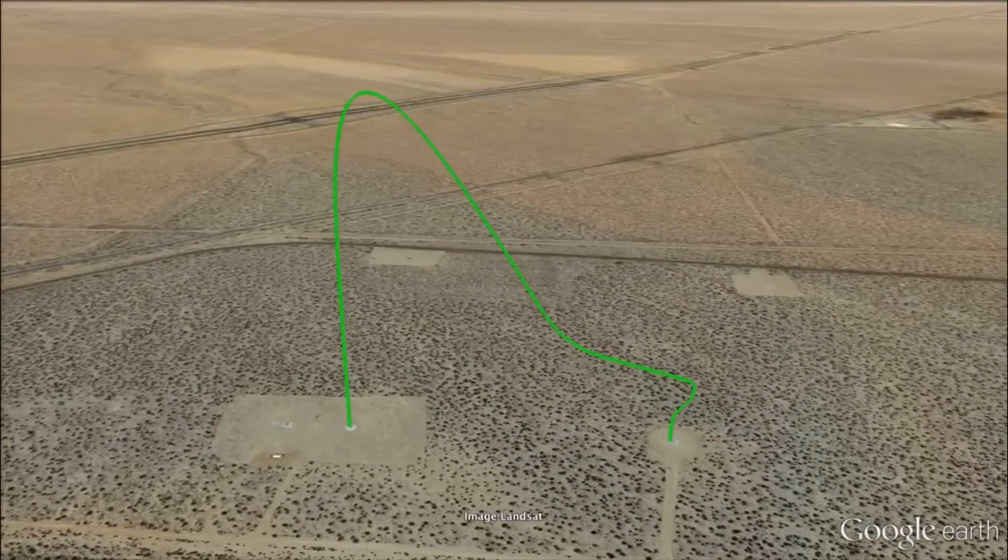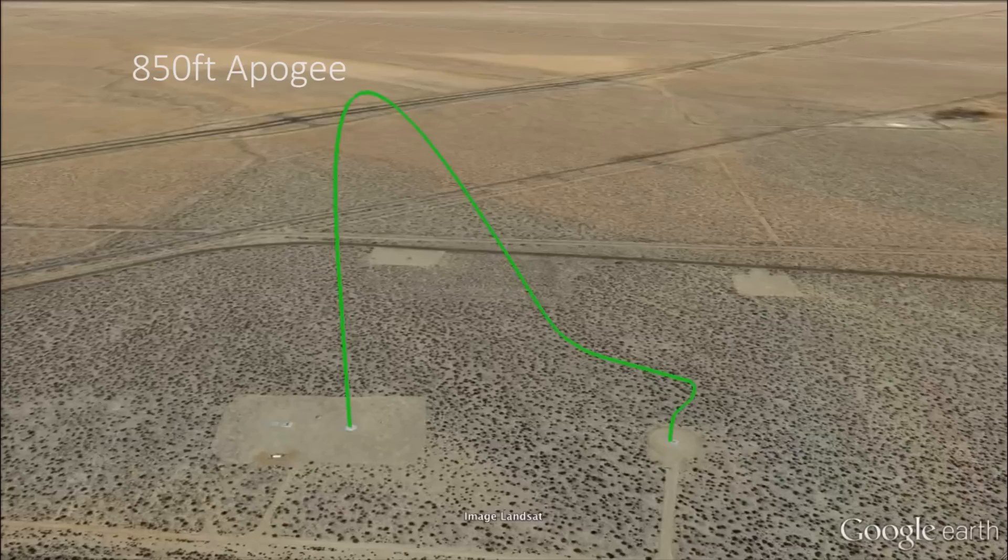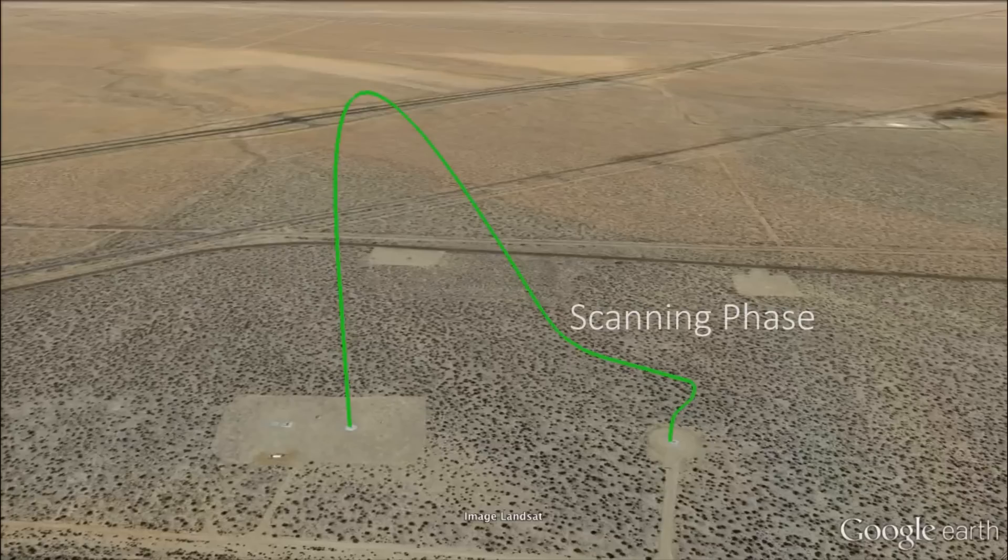The trajectory begins with a boost phase, with zombie rapidly accelerating to more than 40 miles per hour before reaching an apogee of over 850 feet. After apogee, zombie begins to traverse downrange and enters a scanning phase near the landing site.